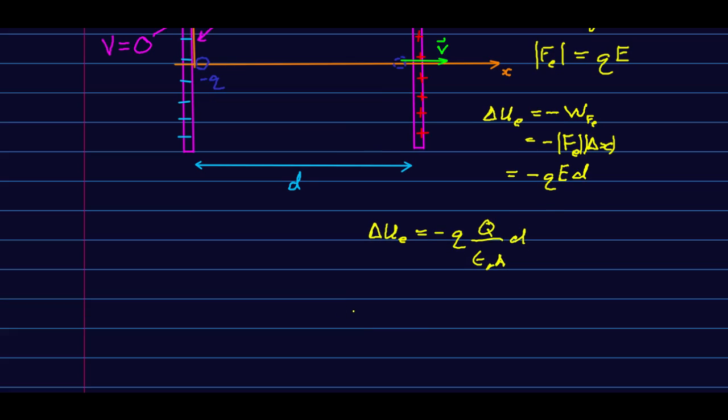But look what we can do now. Our delta V has to be our delta U over our probe charge, which is negative q, negative q. And so if we just divide this by negative q, it's going to take this negative q out, and we just end up with big Q over epsilon naught A, d.